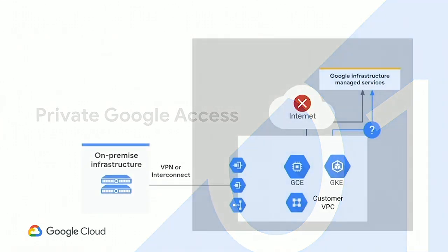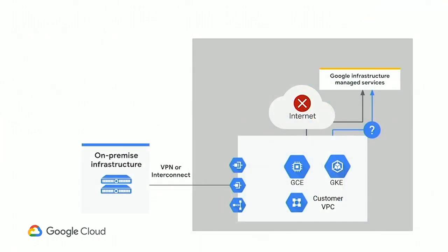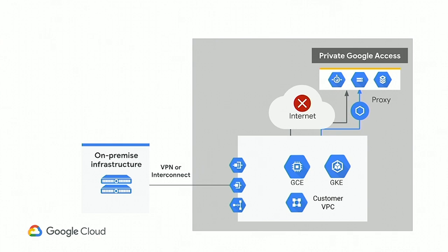Now let's talk about Private Google Access. We saw how internet was not an option to connect to these services. Previously, it was a simpler task to figure out where the request to these services was coming from, because each customer gets a unique public IP. With private IP, we need to understand which customer is sending this request. This black box to the customer is a proxy — an internal Google proxy which we call the Google Cloud Front End. Like a gateway, it connects the customer's network to the services lying on Google infrastructure, and it understands what IPs a customer's VPC has and makes sure that the traffic is routed back to it.